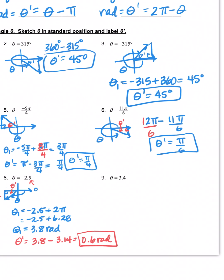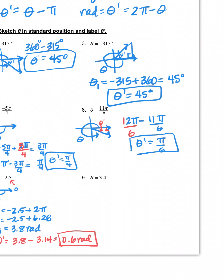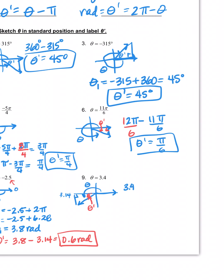Number nine: 3.4 radians — positive this time. Since pi is approximately 3.14, and 3.4 is just a bit more than pi, the angle falls in quadrant three. Applying the quadrant three rule: 3.4 minus 3.14 gives 0.26 radians. You can round to one or two decimals — I'm looking for the process.